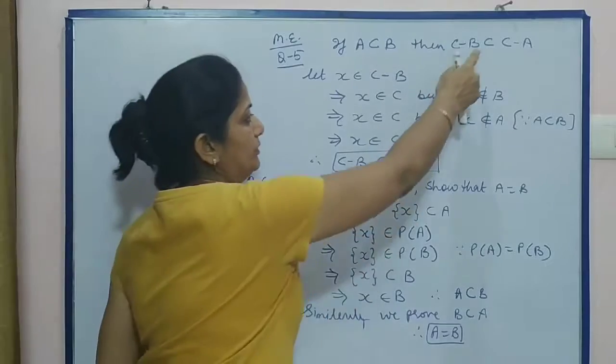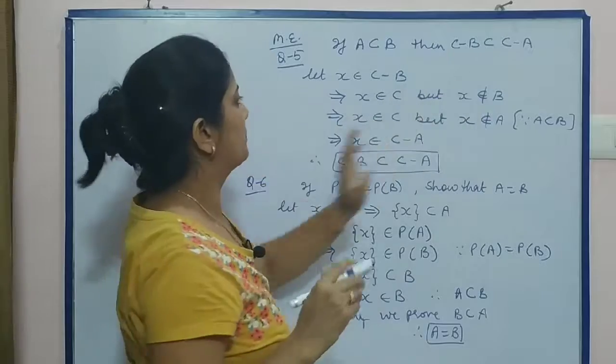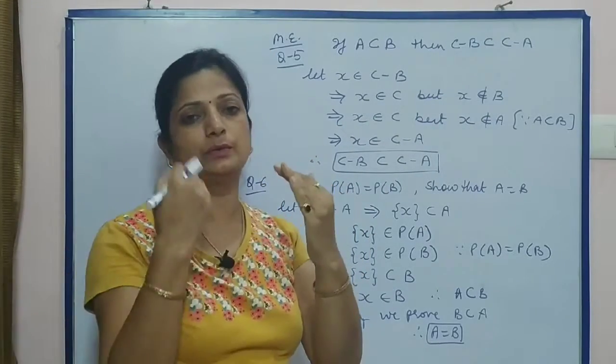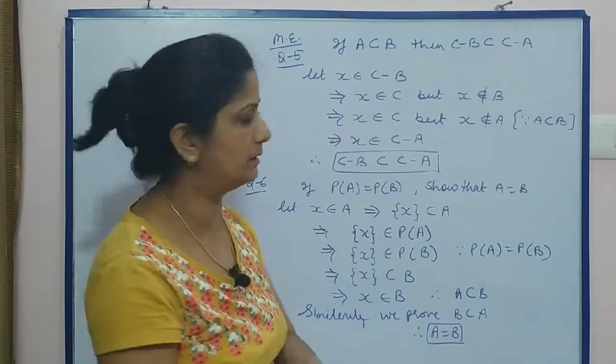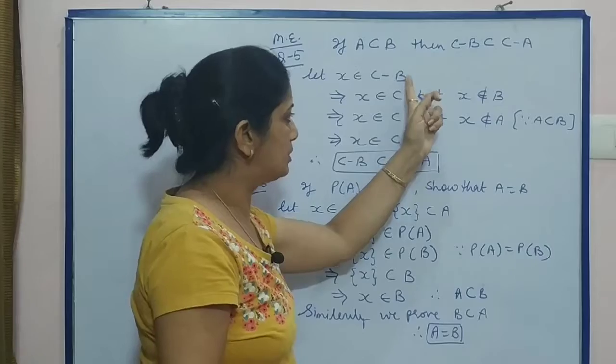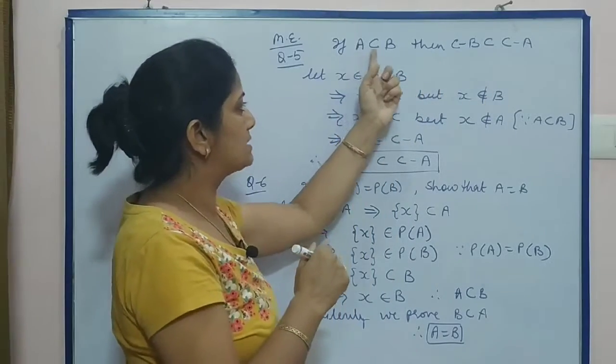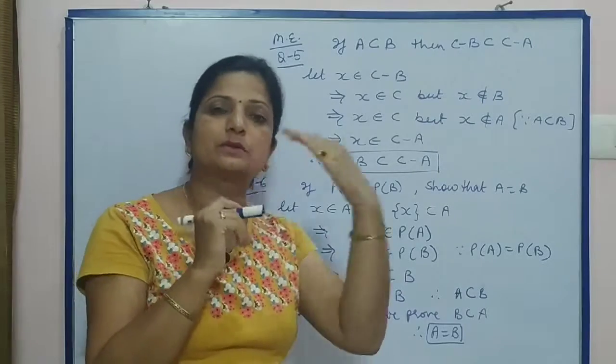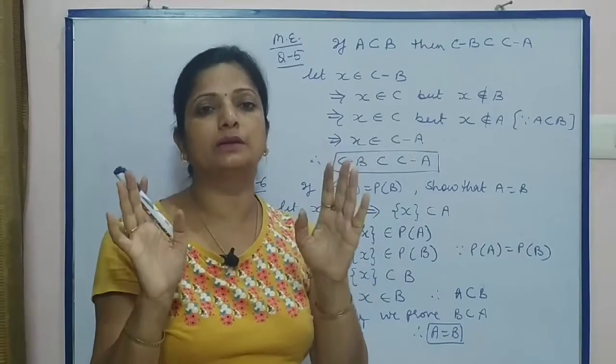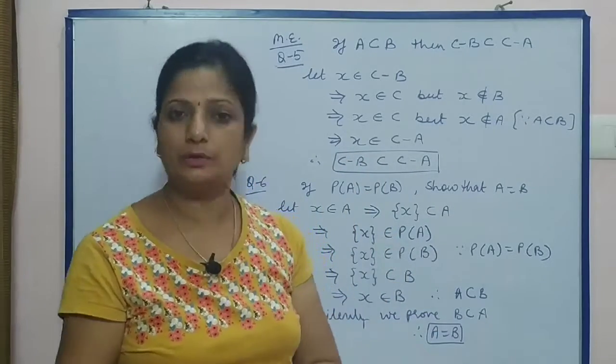This is the sign of subset. Let x belongs to C minus B. The minus definition means that x belongs to C but x does not belong to B. Since we are given A subset of B, when x does not belong to B - if any element does not belong to the larger set, then it is understood that it does not belong to the smaller set which is the subset.